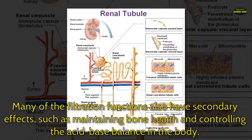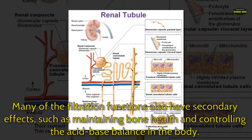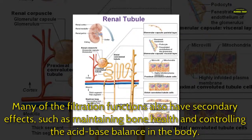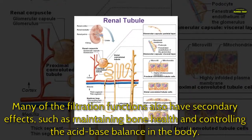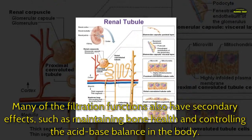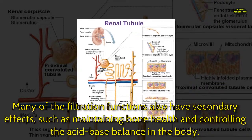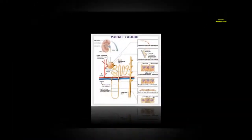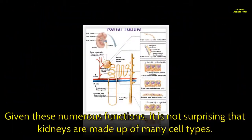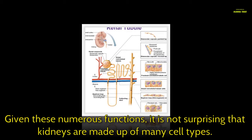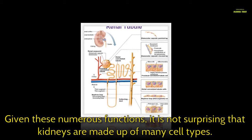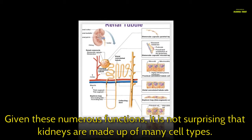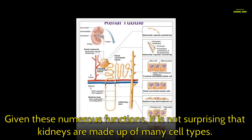Many of the filtration functions also have secondary effects, such as maintaining bone health and controlling the acid-base balance in the body. Given these numerous functions, it is not surprising that kidneys are made up of many cell types.